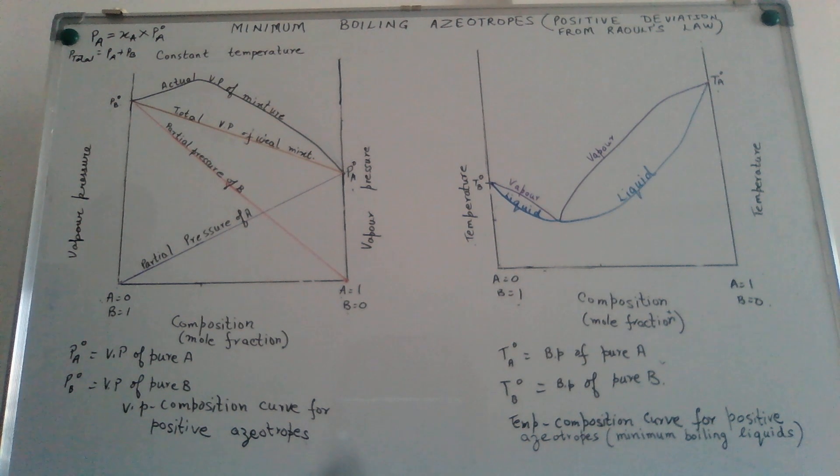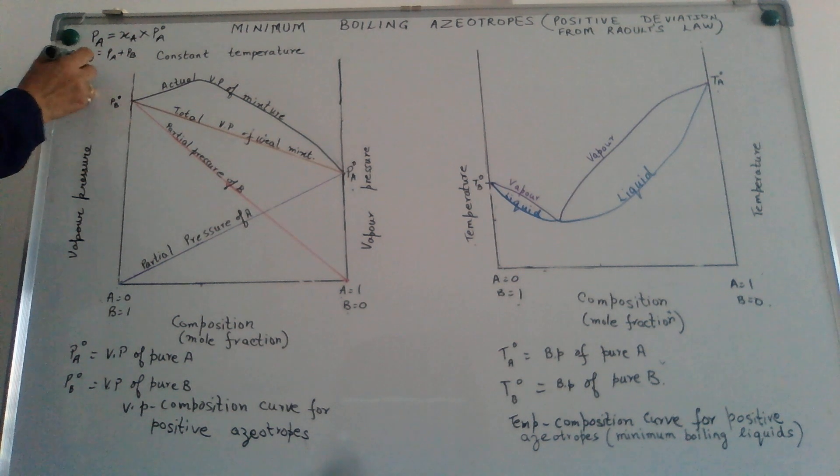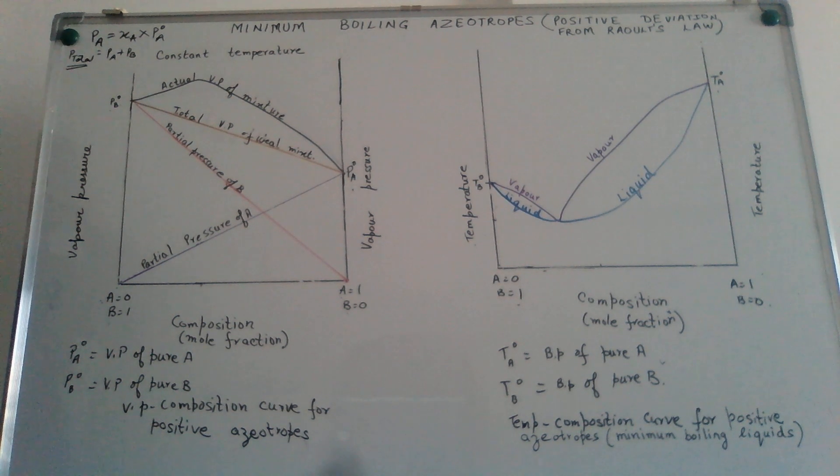Now, what has been observed is very few solutions obey the Raoult's law ideally. In actual situations, we have liquids wherein the total vapor pressure is either above the theoretical or predicted vapor pressure or it is below the theoretical or the predicted vapor pressure as predicted by Raoult's law.